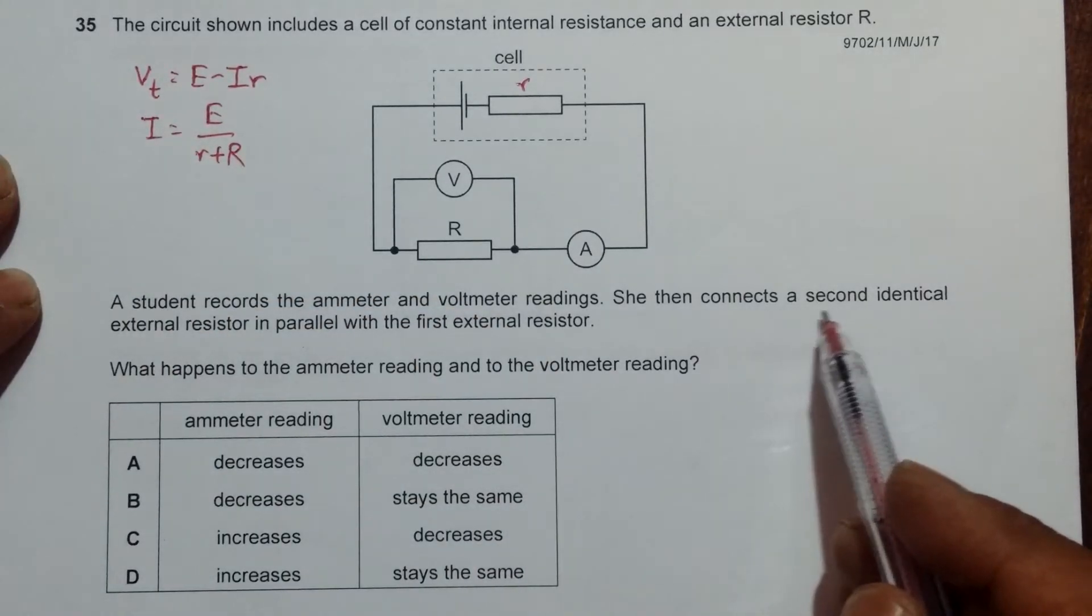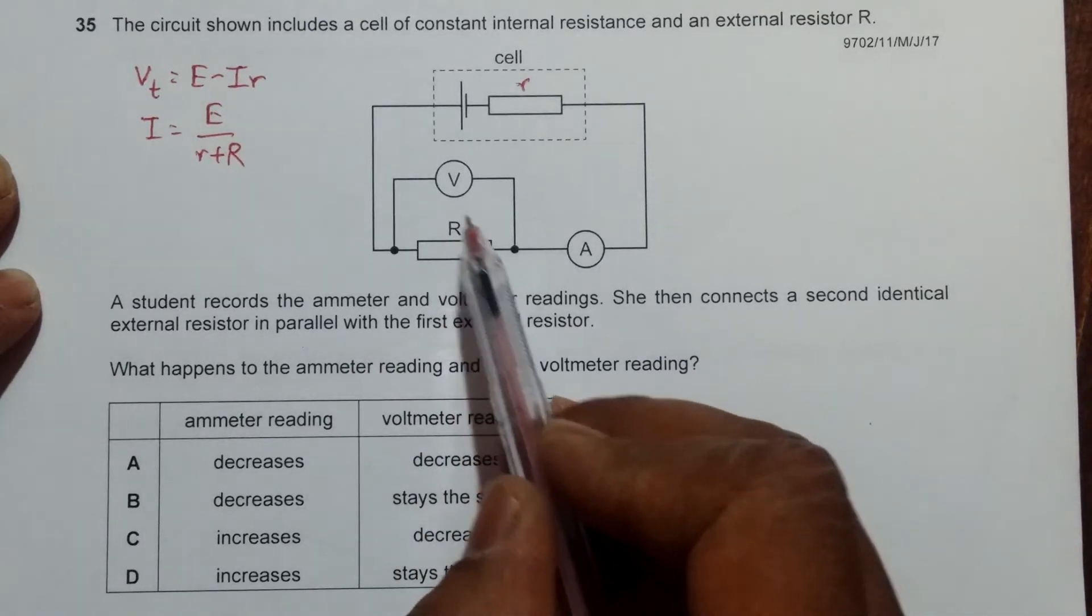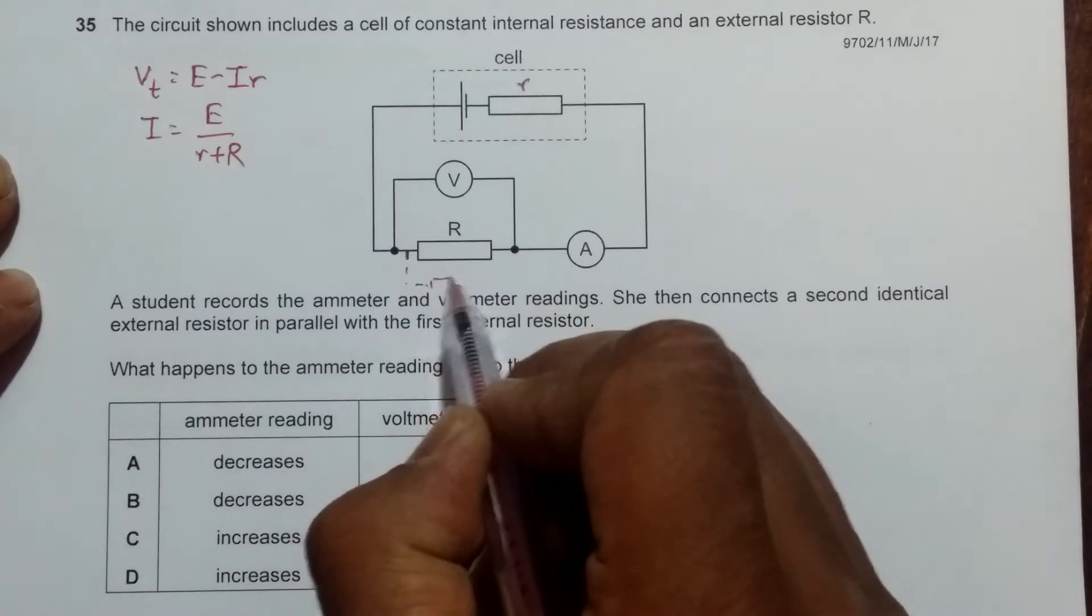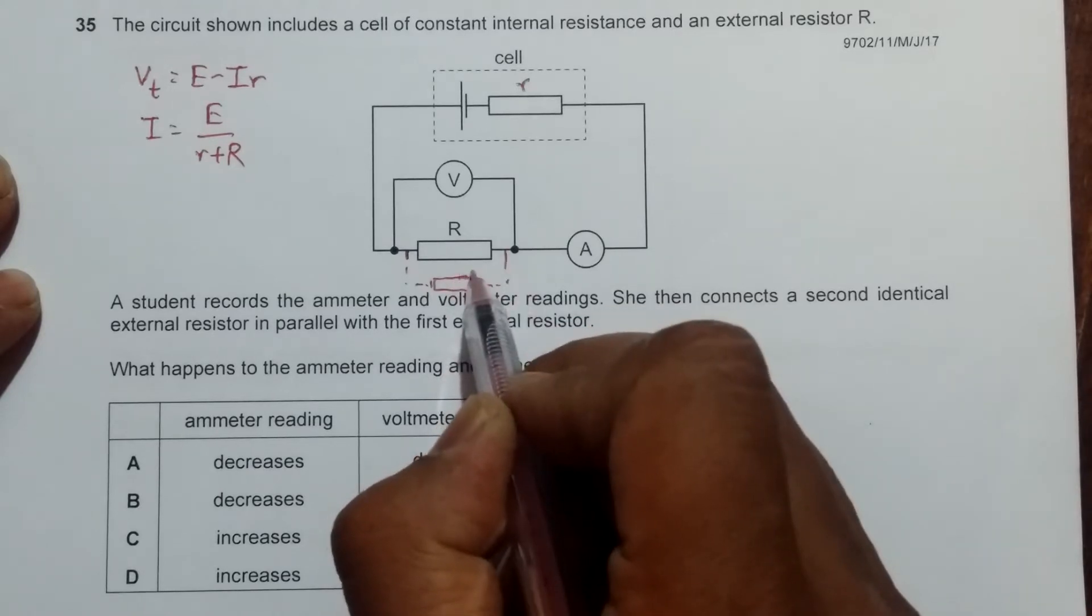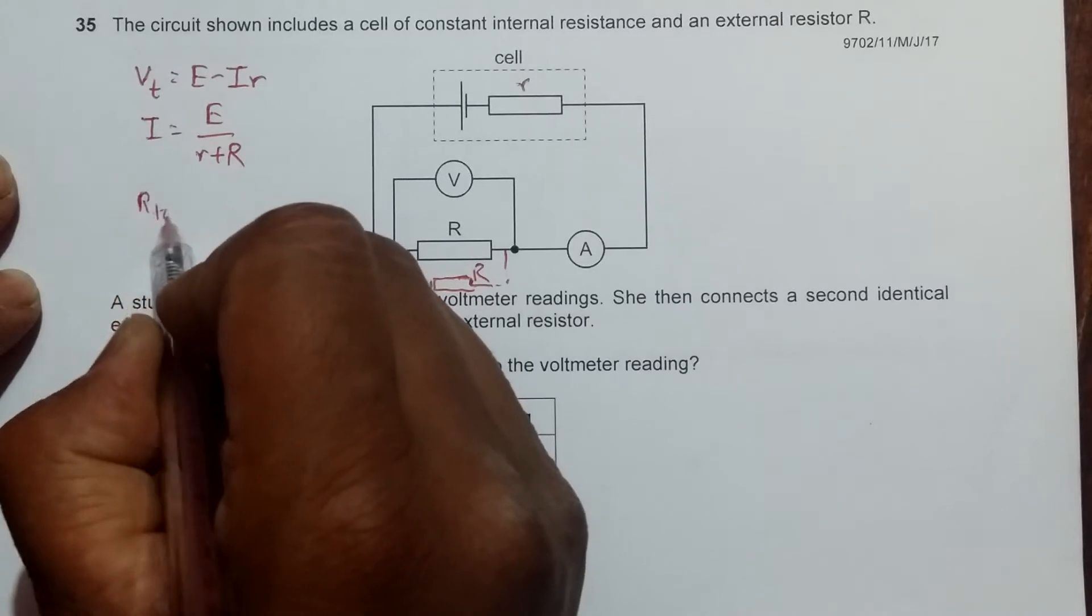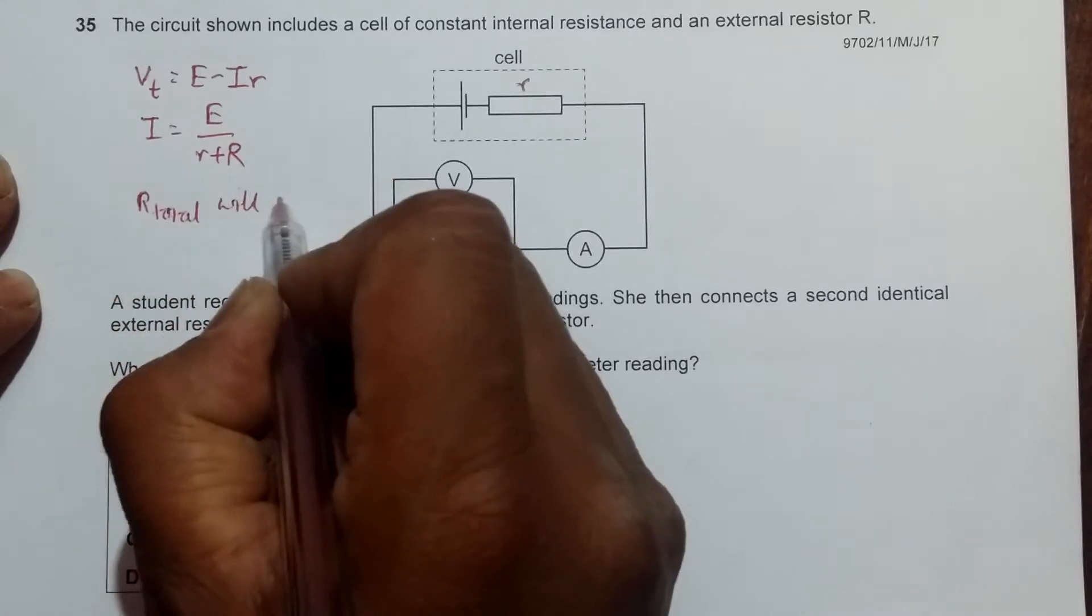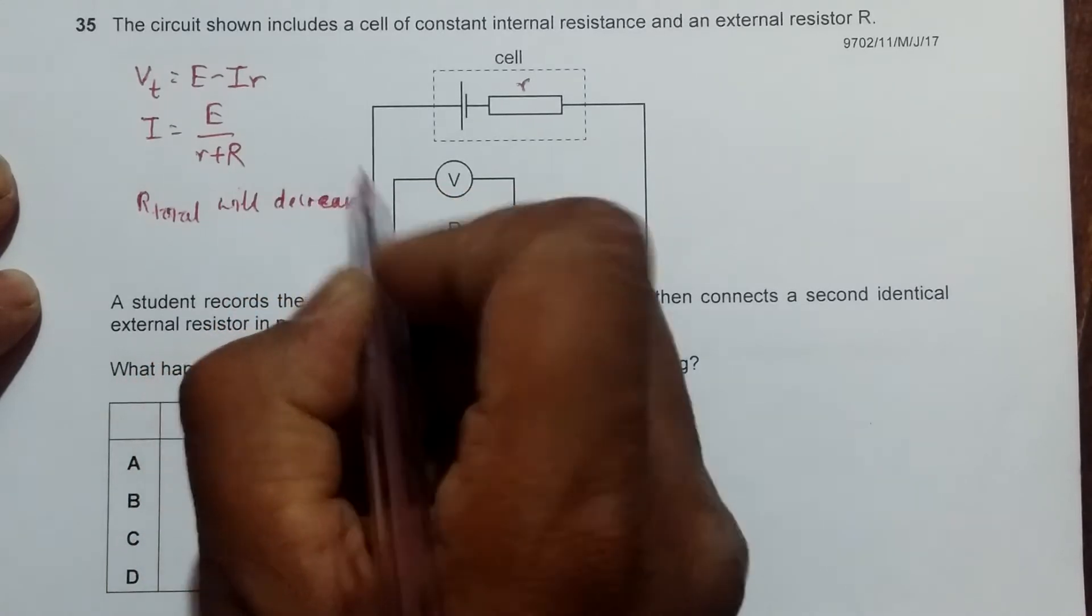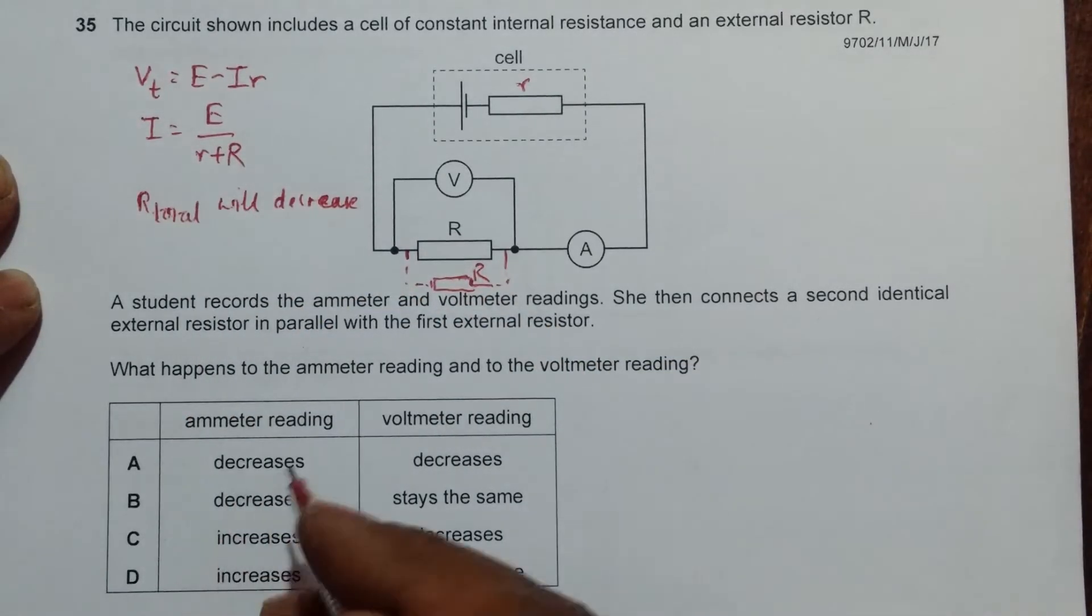Now we have to connect a second identical external resistor in parallel with this. If I do so, the total R will decrease because it is R parallel R, which will be R by 2. So R will be decreased.